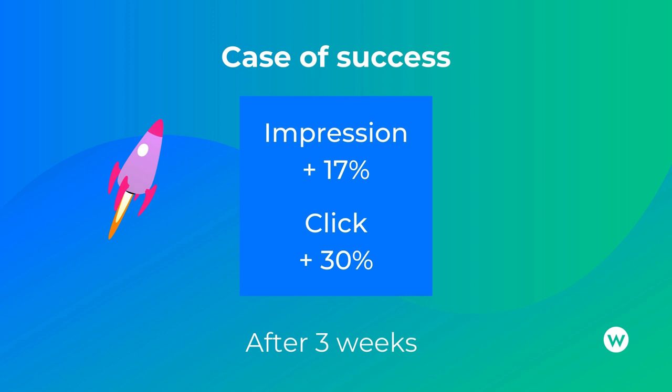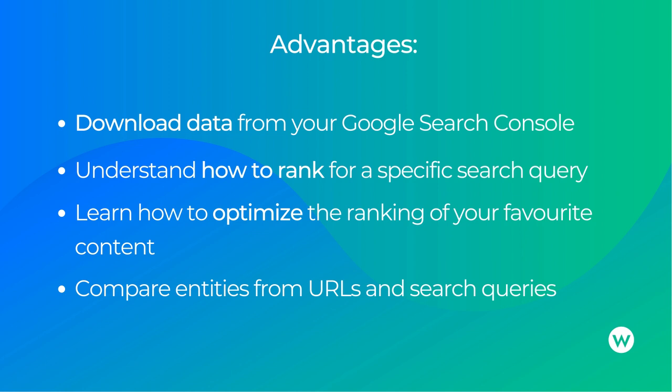Here is a successful case of a client wanting to gain visibility using semantic SEO. Using the add-on, we applied WordLift to a selection of URLs while keeping an equal set untouched. After only three weeks, the group with the JSON-LD from the add-on gained 17% more impressions and 30% more clicks.